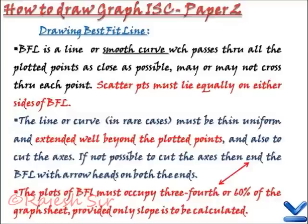Now, best fit line is a line or a smooth curve which passes closely through all the plotted points. It may or may not cross through any of these points. The scattered point must lie equally on either sides of the best fit line. Probably, if you have done regression, you know the perpendicular distance of the scattered point must lie equally on the sides of the line that you have plotted, line of best fit.